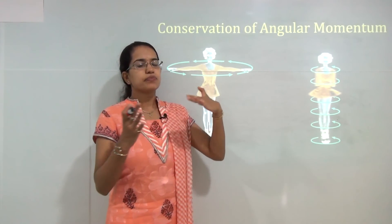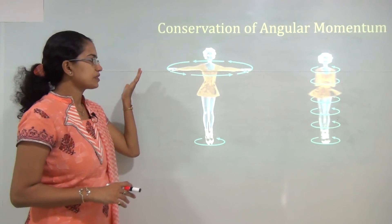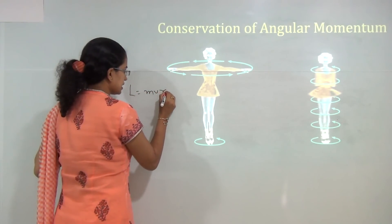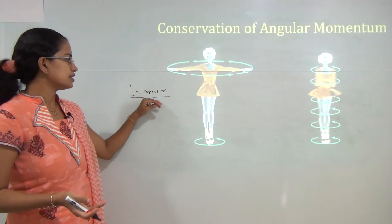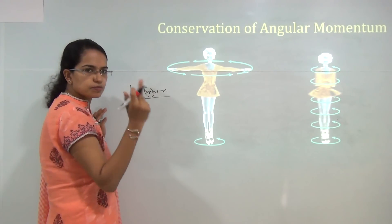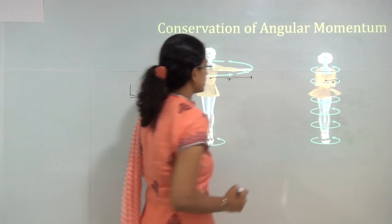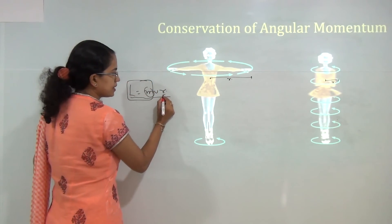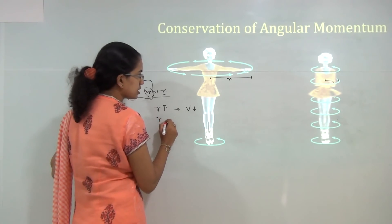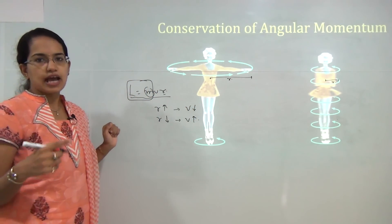To understand the intensity of jet streams we need to understand angular momentum and its conservation. Angular momentum is a product of mass, velocity, and radius. Using the example of two spinning girls: when the radius is large the velocity is less, but when the hands are brought closer the radius decreases and as a result the velocity increases.